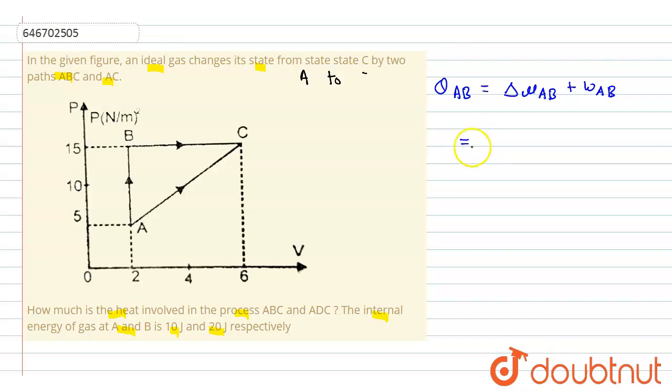This will be equal to the change in internal energy, which is U_B minus U_A plus W_AB. Then we get Q_AB.